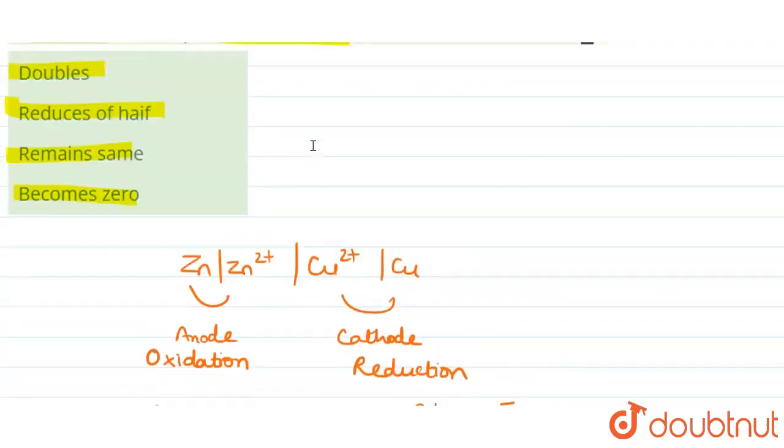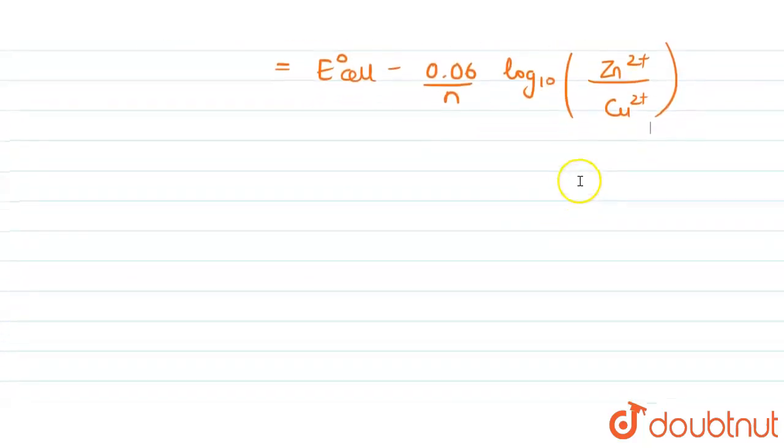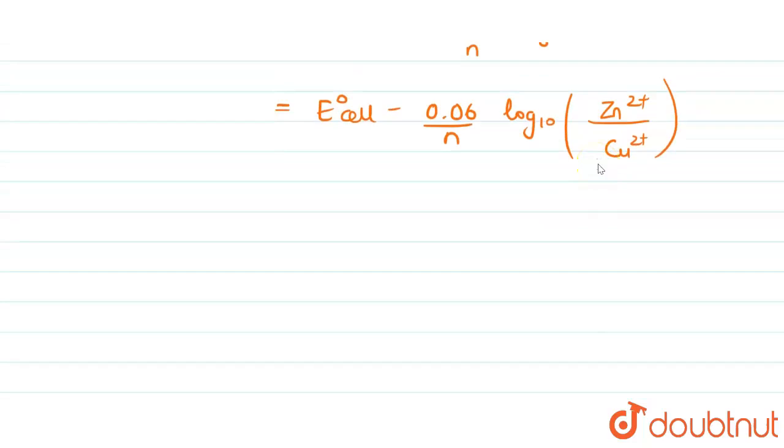So now first we will take the concentration of Zn2+ on Cu2+, we will let it be like this. So this is E cell for first case.